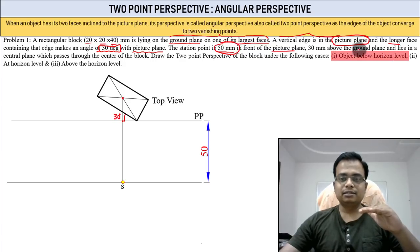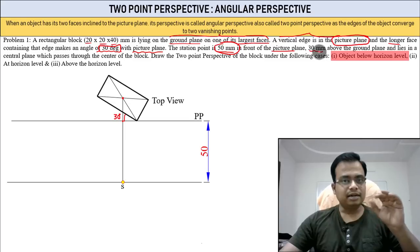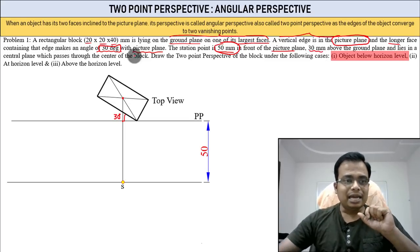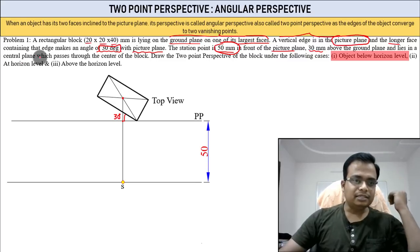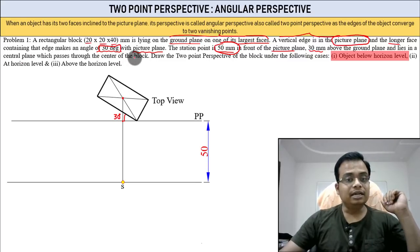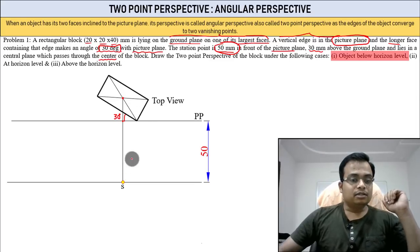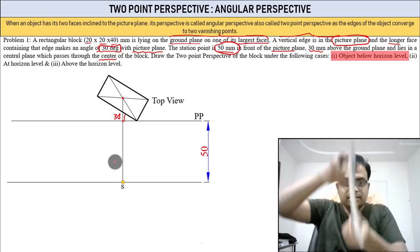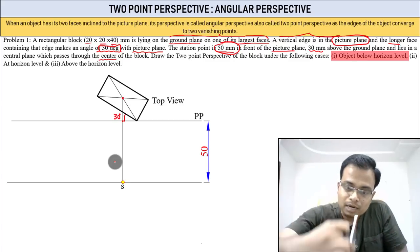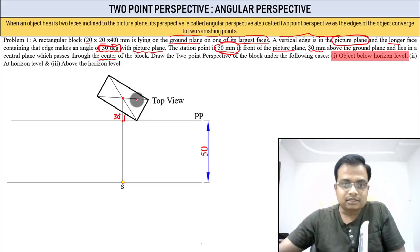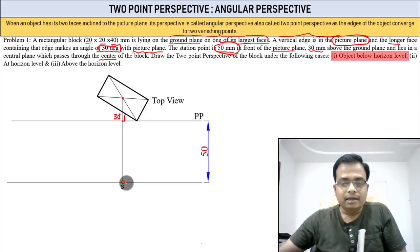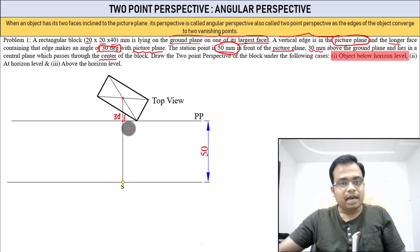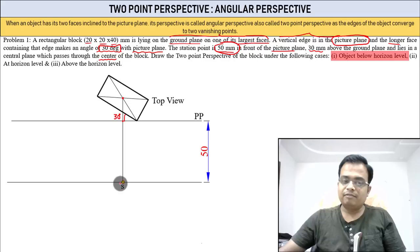The station point is 50 millimeters in front of the picture plane. At the same time, it is 30 mm above the ground plane, and it lies in a central plane. The central plane passes through the center of the block — that line essentially represents the central plane.